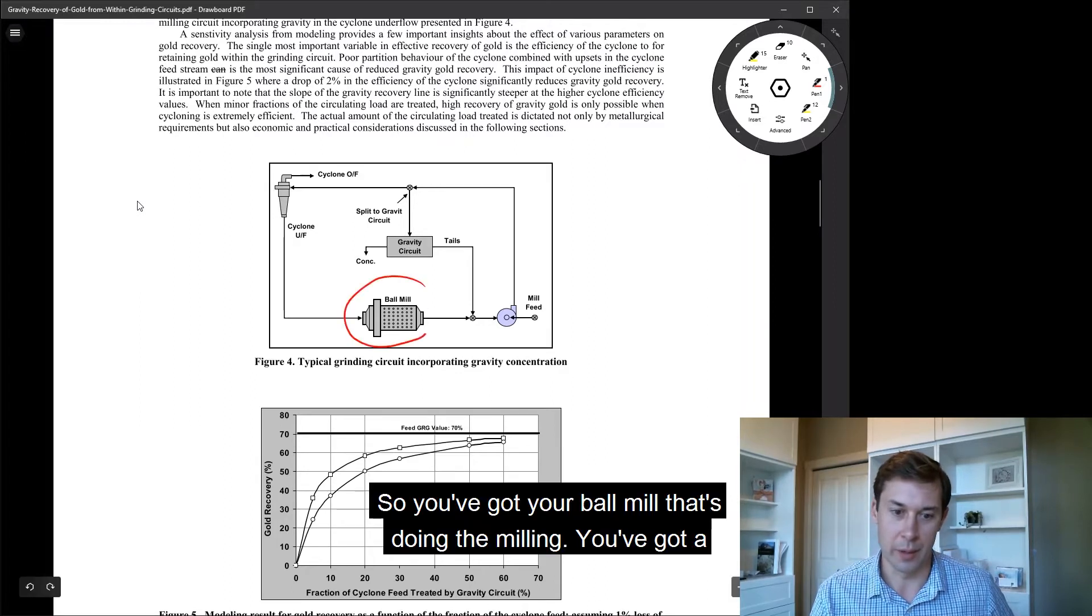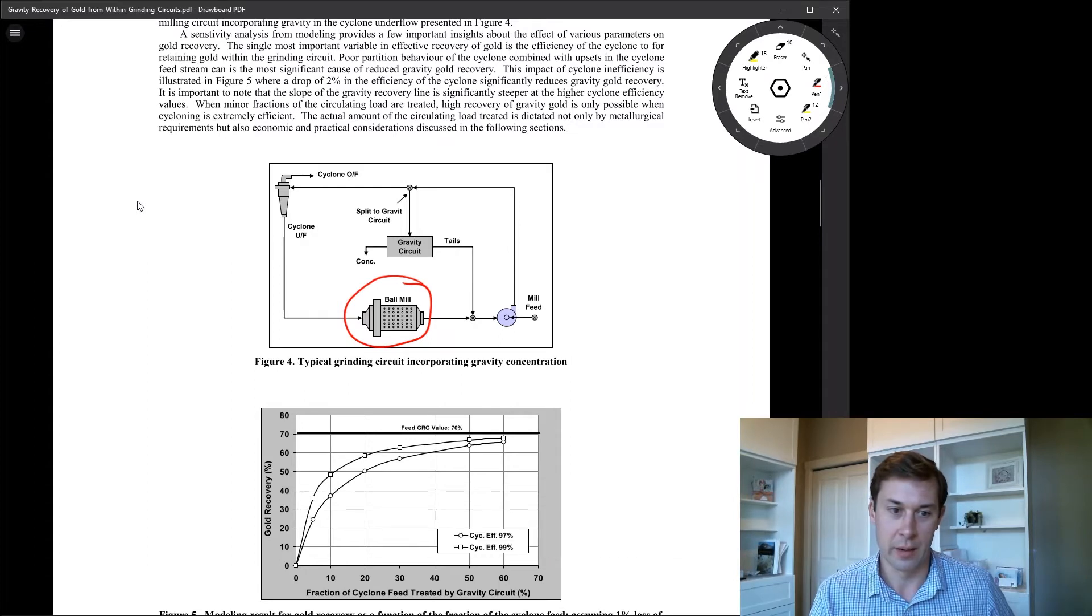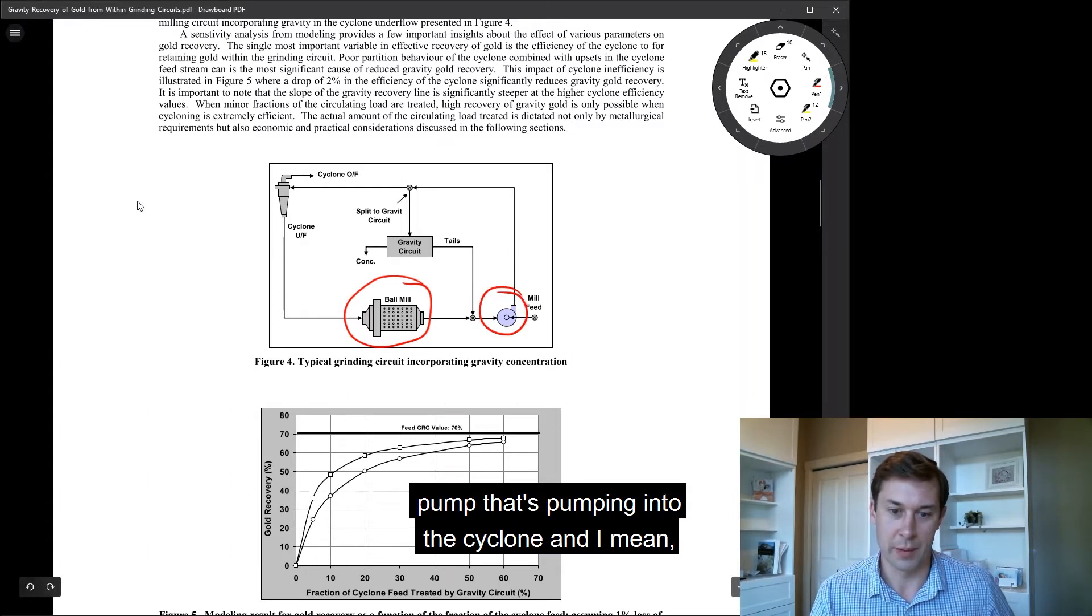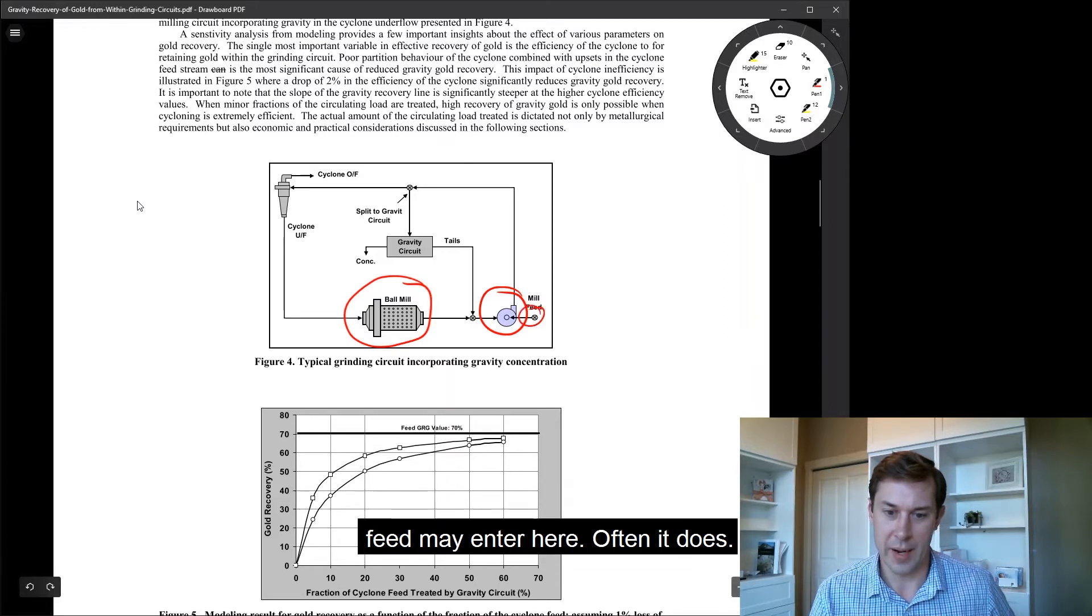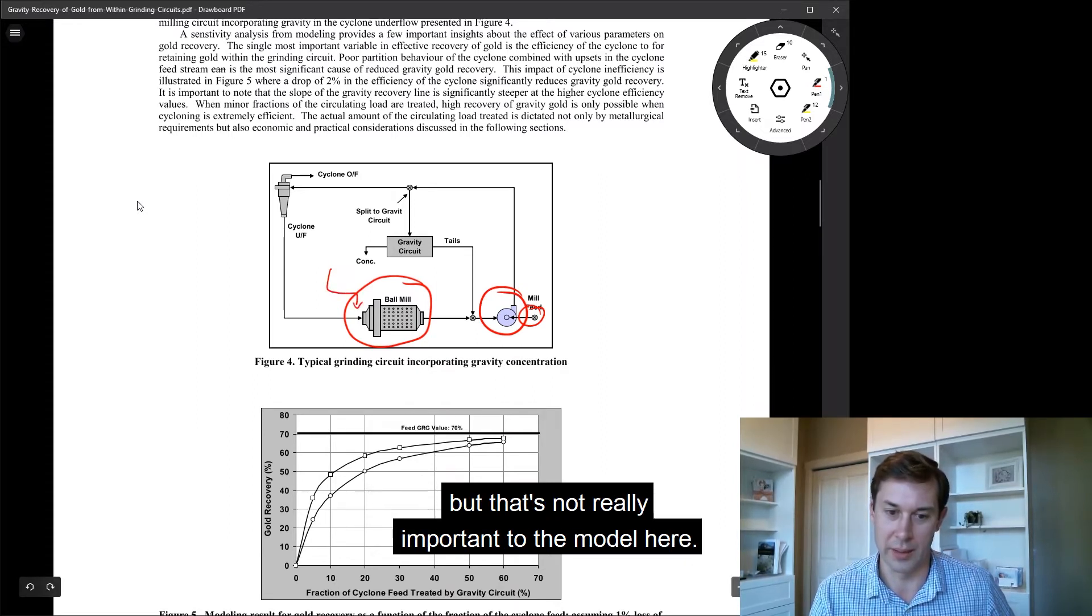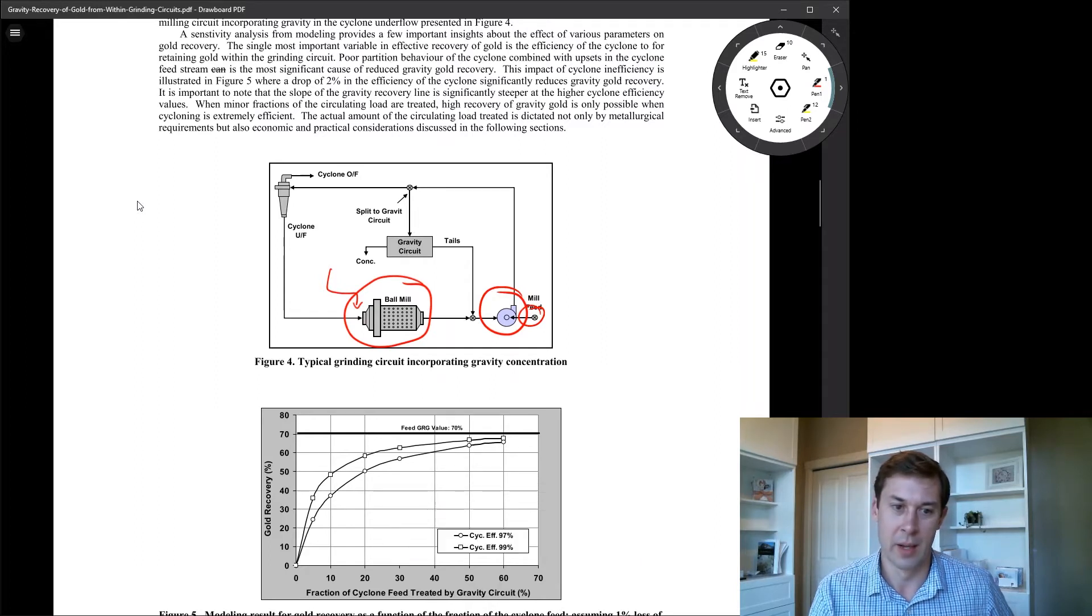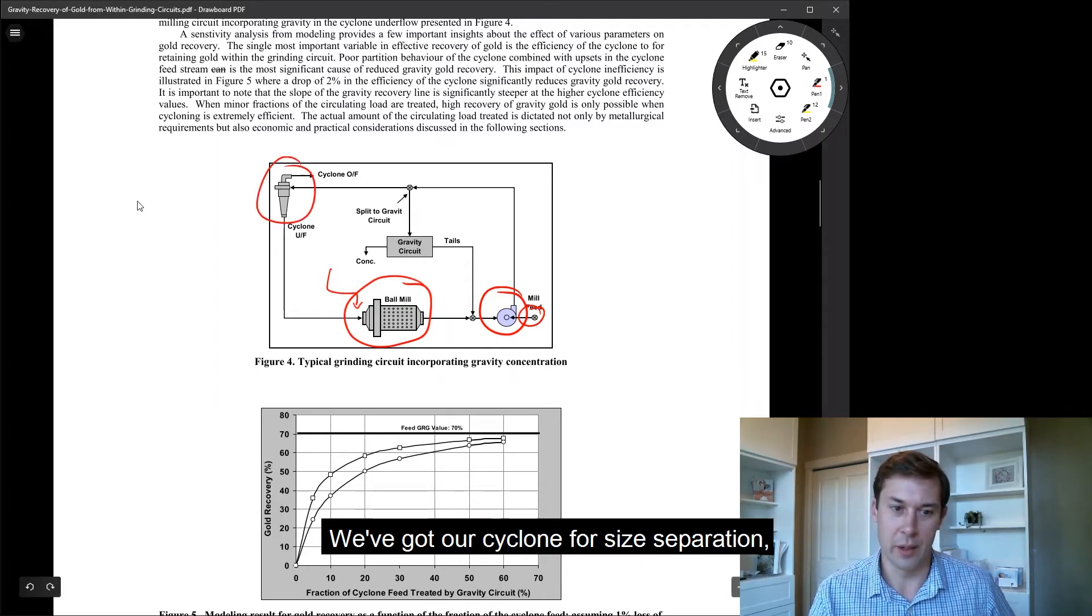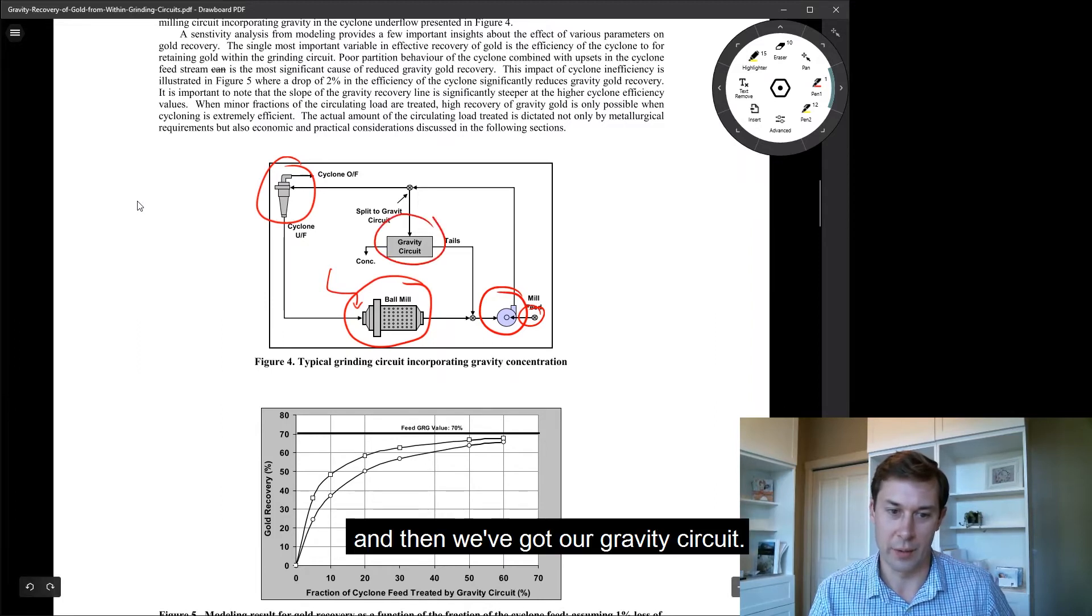So you've got your ball mill that's doing the milling. You've got a pump that's pumping to the cyclone, and feed may enter here, often it does. Feed may also just enter here into the start of the ball mill, but that's not really important to the model here. We've got our cyclone for size separation and then we've got our gravity circuit.